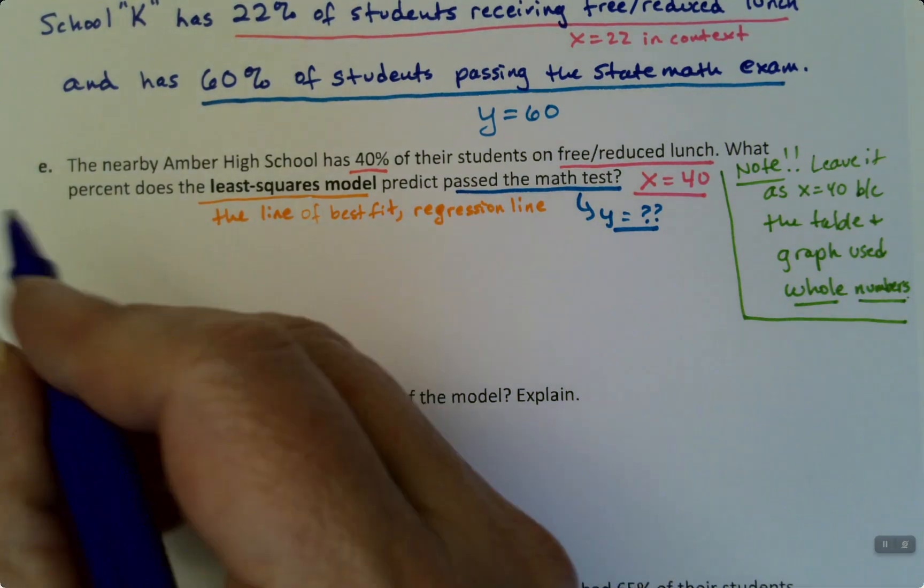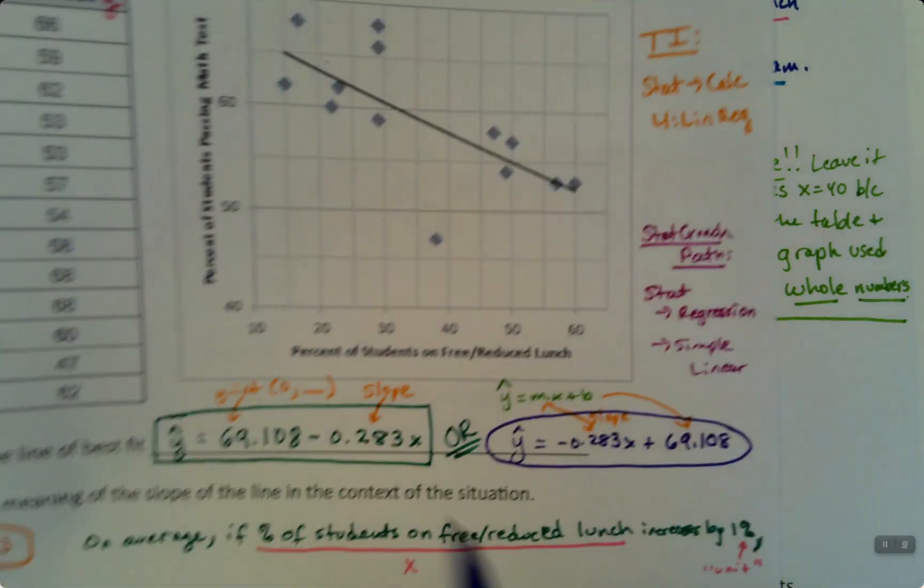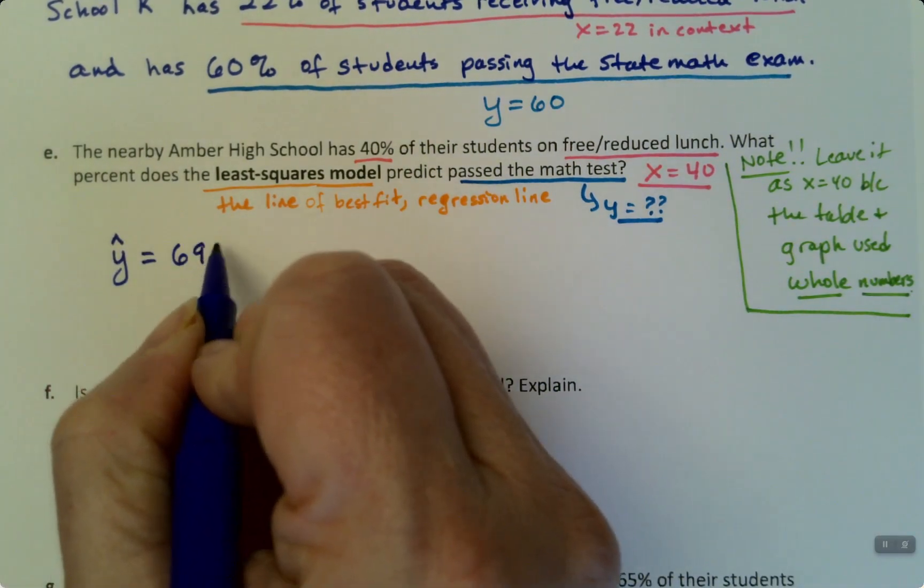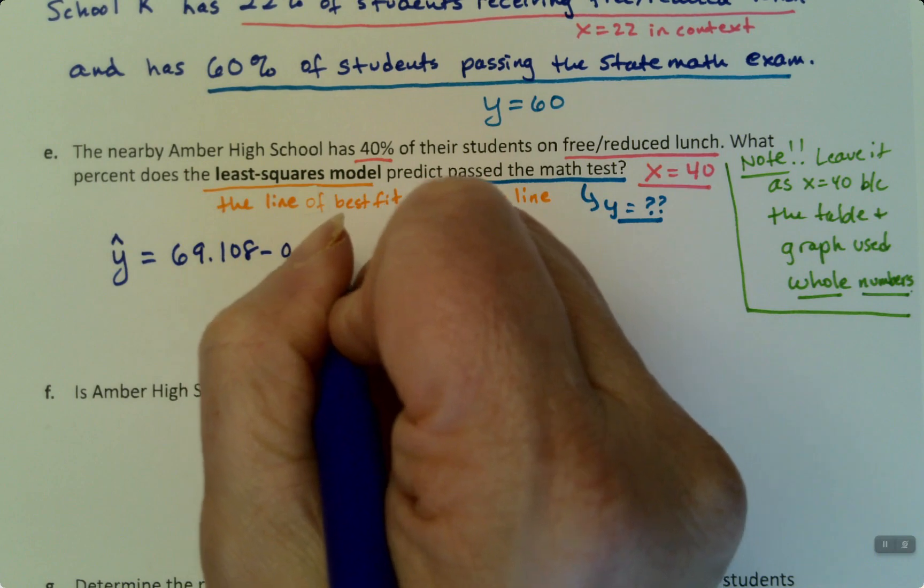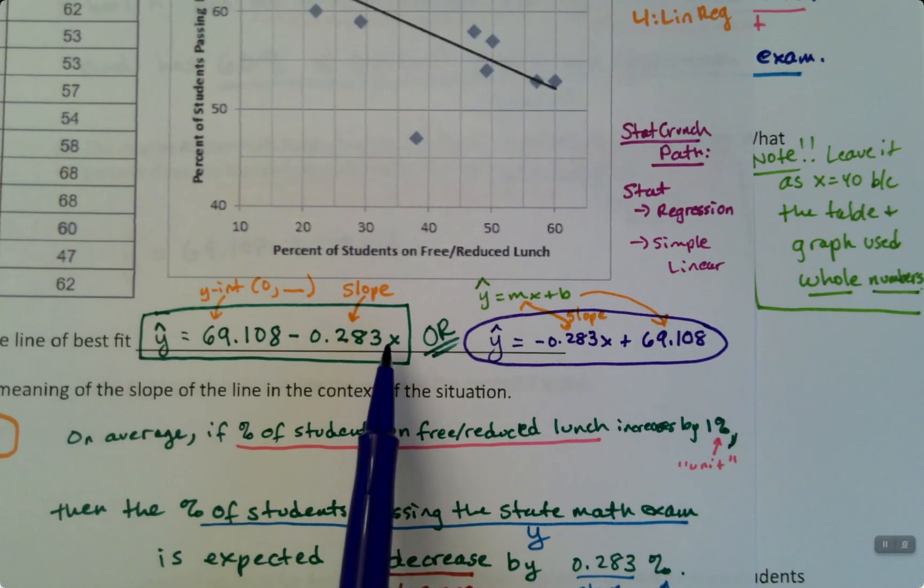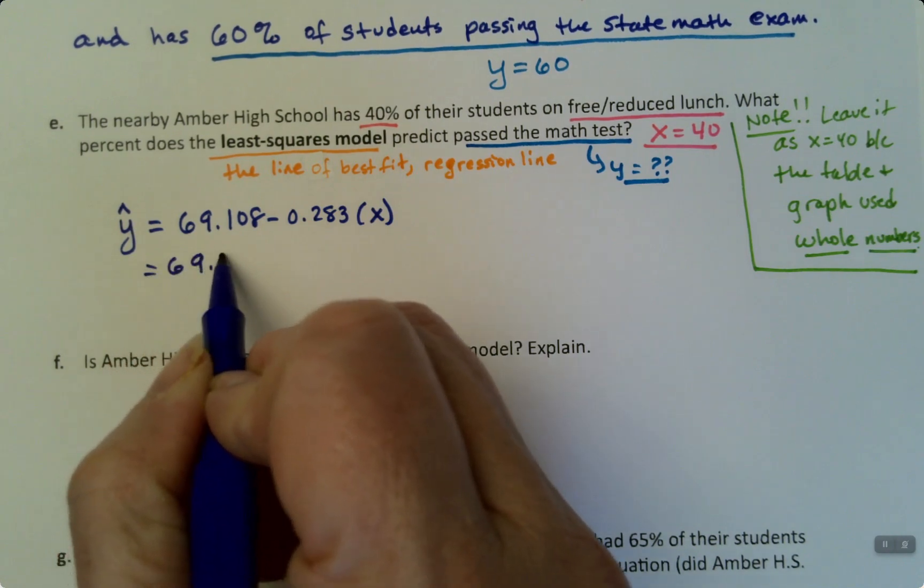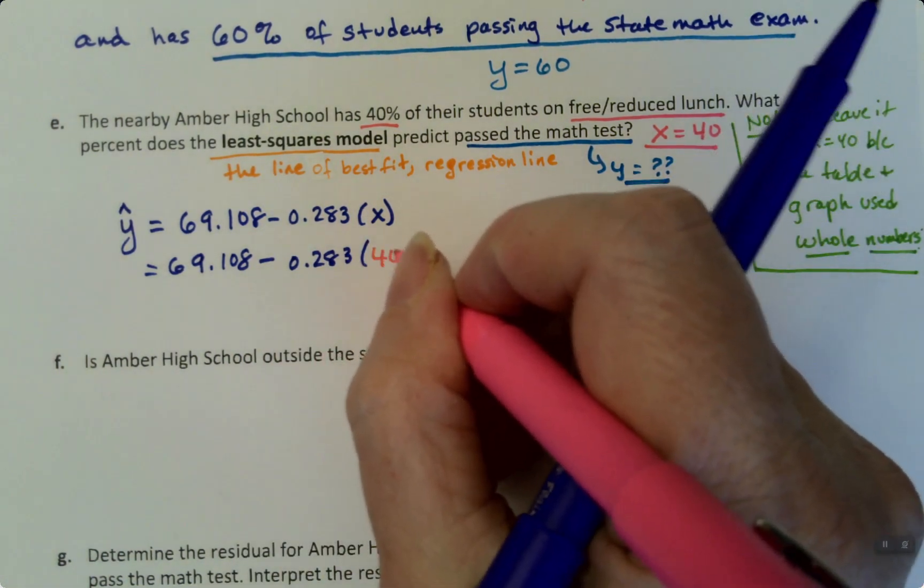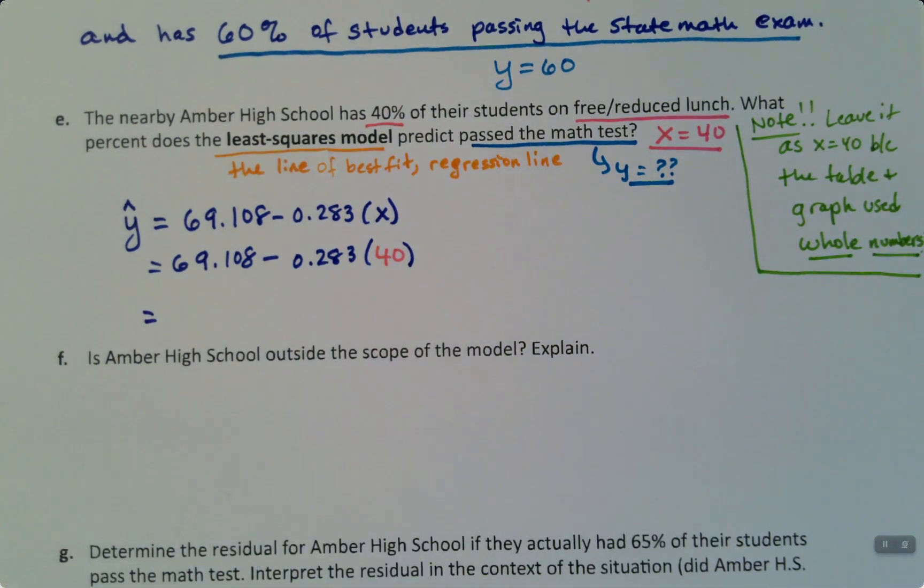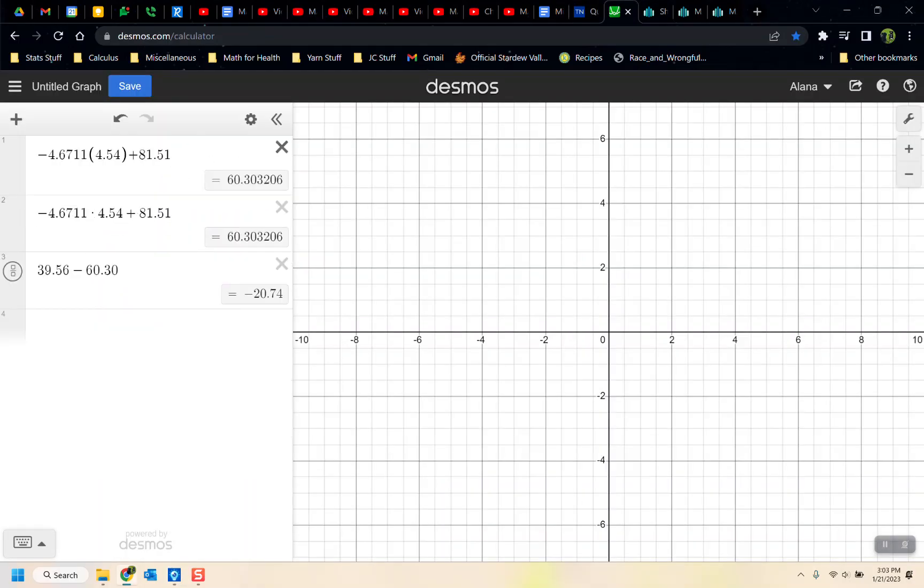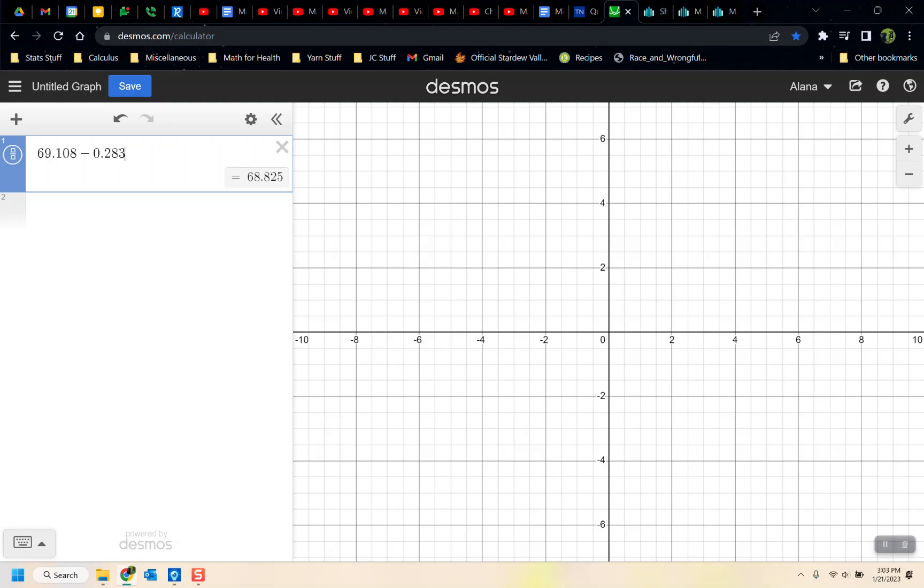Okay, well, the equation we found, we found it right back here. It's 69.108 take away 0.283x. So y equals 69.108 take away 0.283 times x. I didn't bother putting it in parentheses, but it is. That's always multiplication like that. So this is the same thing as 69.108 take away 0.283 times, and then the x was 40. So I'm just going to go stick that into Desmos. Desmos will find that value for us. Alright, Desmos. Let me get rid of some of these things from previous videos. It says 69.108 take away 0.283 times 40.